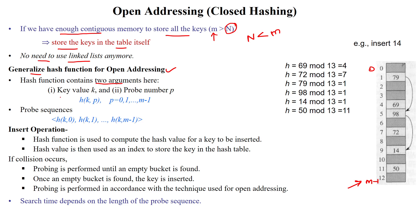Two arguments are important in open addressing: the key value and the probe number, which means the searching number. The probe number starts from 0 at the first searching step, then 1 at the second step, up to m minus 1. So we use the probe sequence h(key, 0), h(key, 1), up to h(key, m-1). We have m number of sequences to search or insert a value into any index.